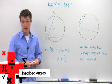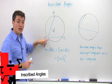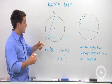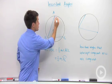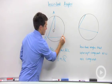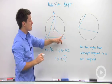Inscribed angles are different from central angles because their vertex is on the circle. So if I were to draw in two radii which would form a central angle AOC,